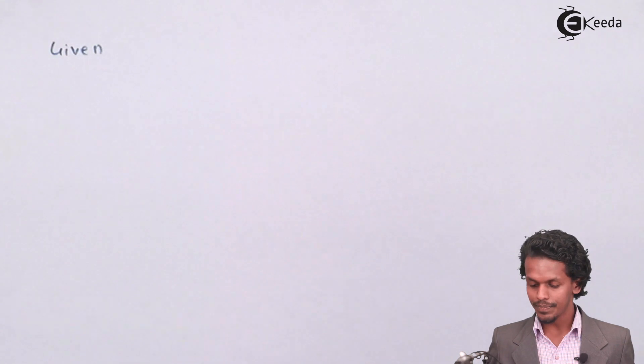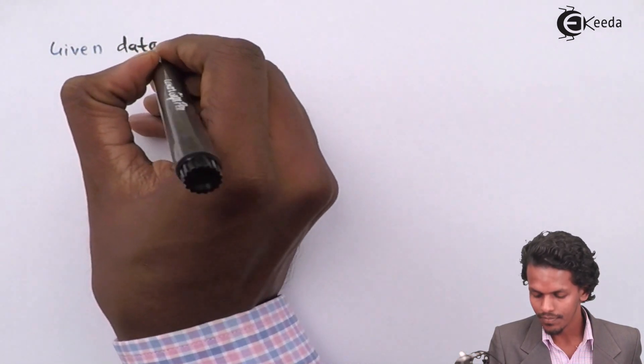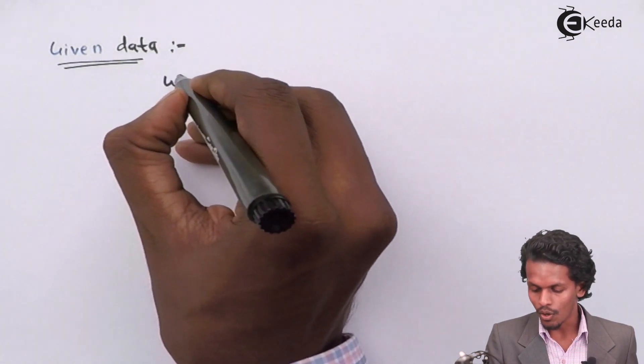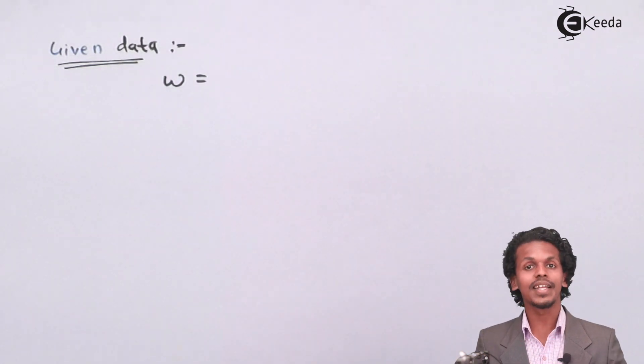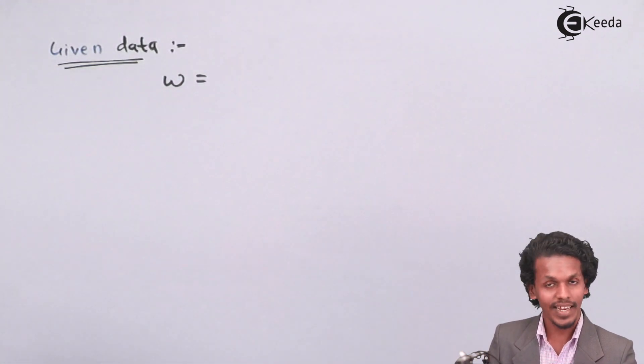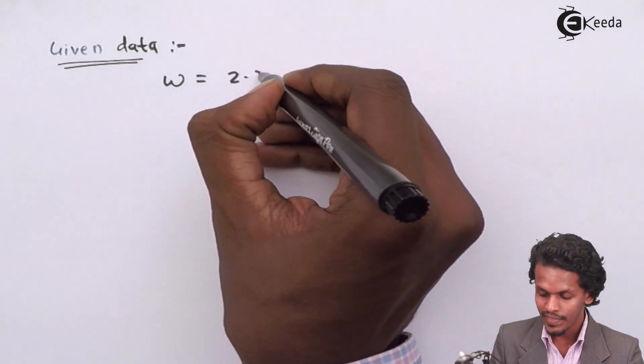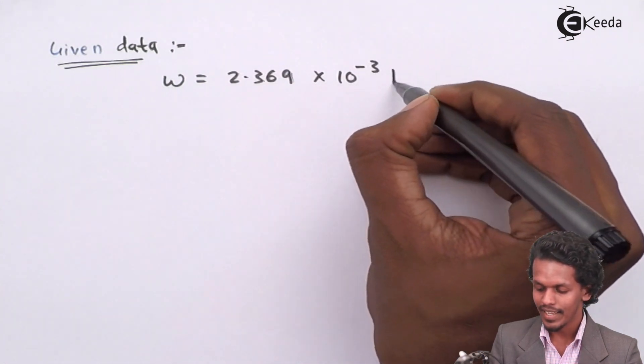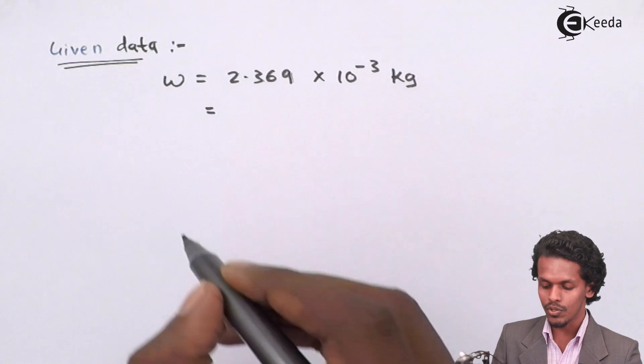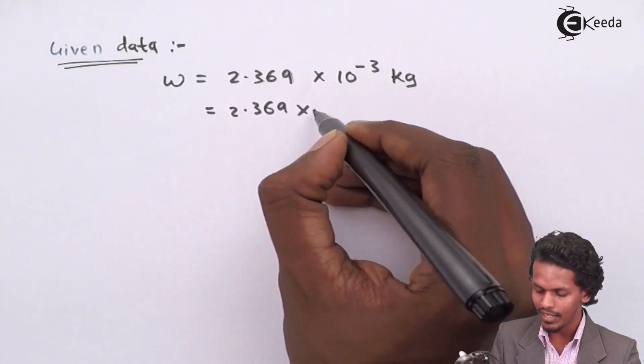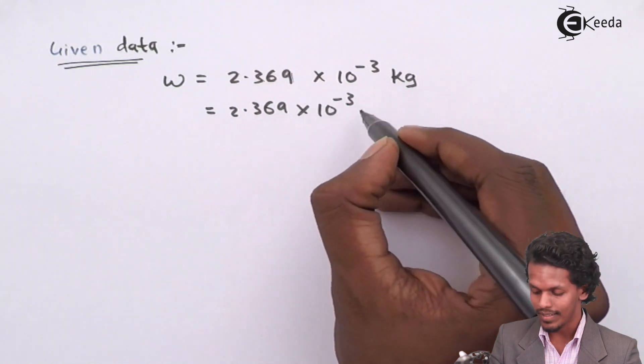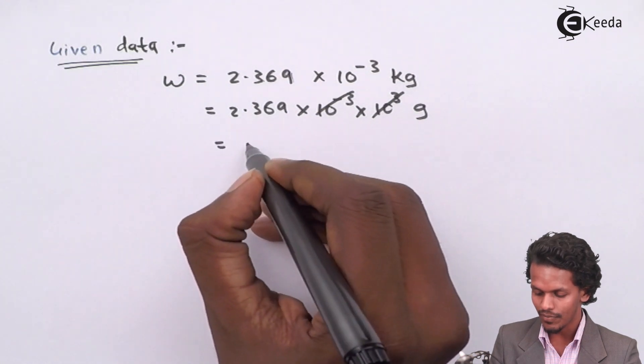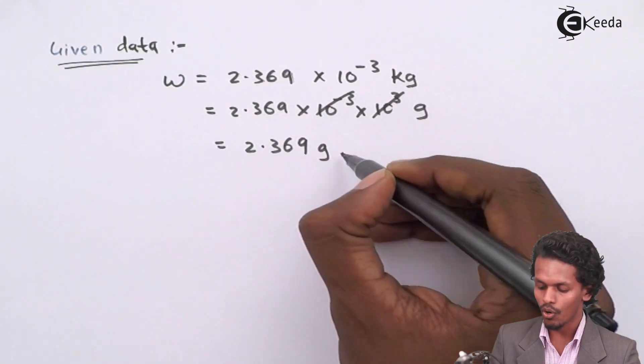The given data says that the weight or mass of copper that has been deposited is 2.369 × 10^-3 kg. This can be converted into gram as 2.369 × 10^-3, where kilo is 10^3 gram. This will cancel out and the answer we get is 2.369 gram of copper.